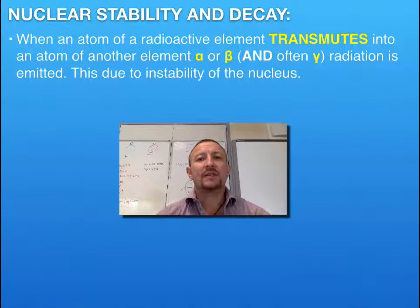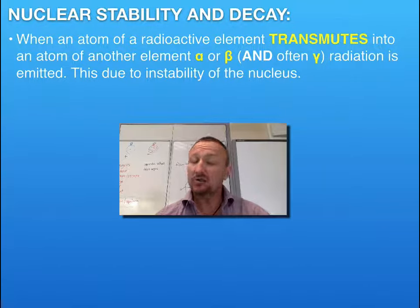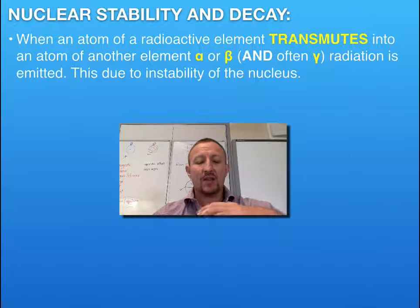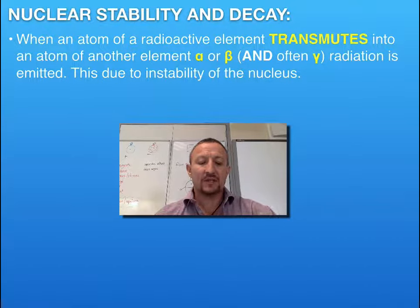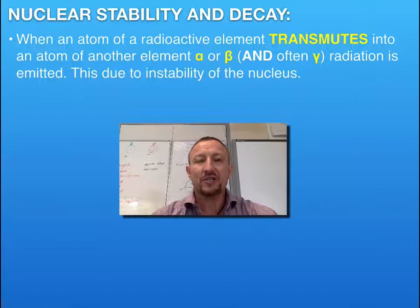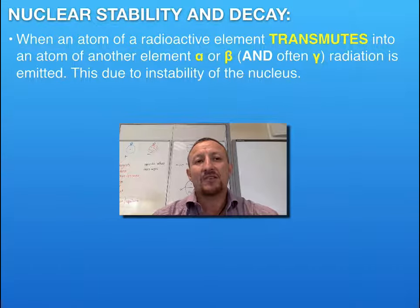So what we need to understand is that whenever we get some form of transmutation, transmutation basically means that there's going to be a change in the nucleus of an element due to its radioactive decay. So as a result if it's undergoing fission, the nucleus will split. It will split into two different types of elements.